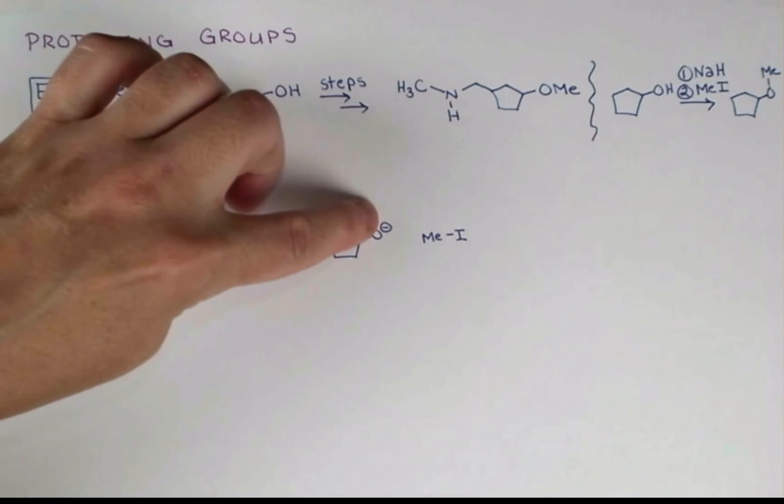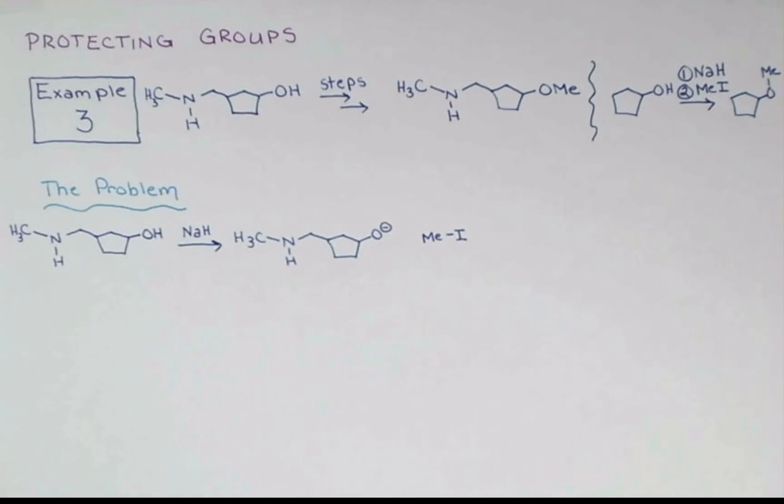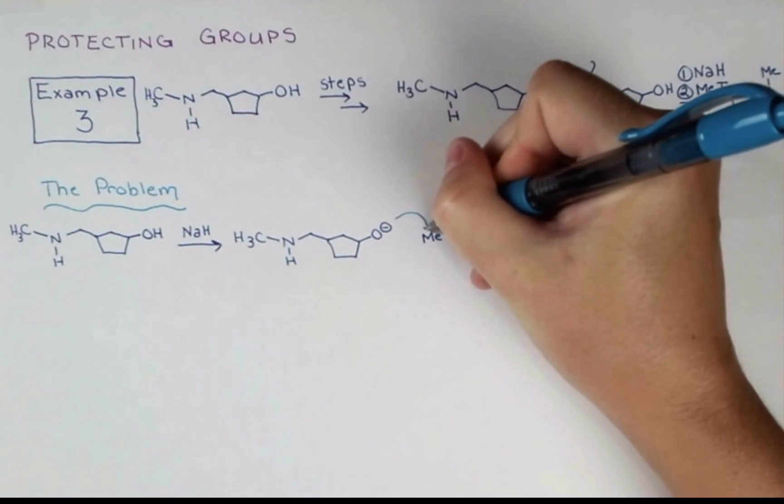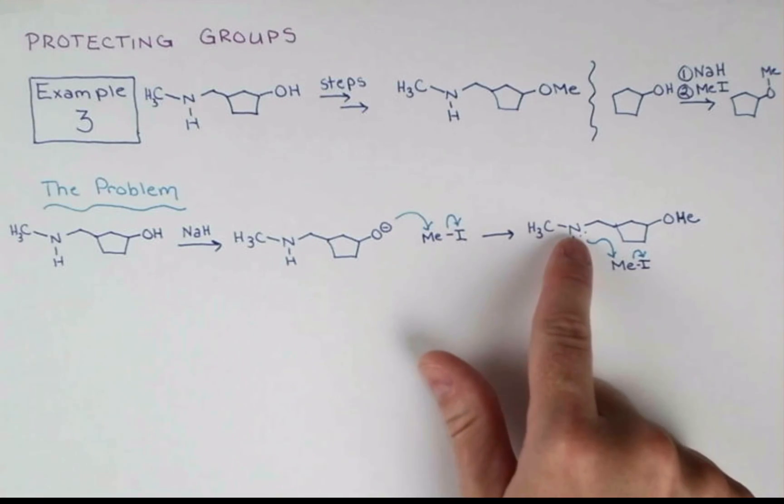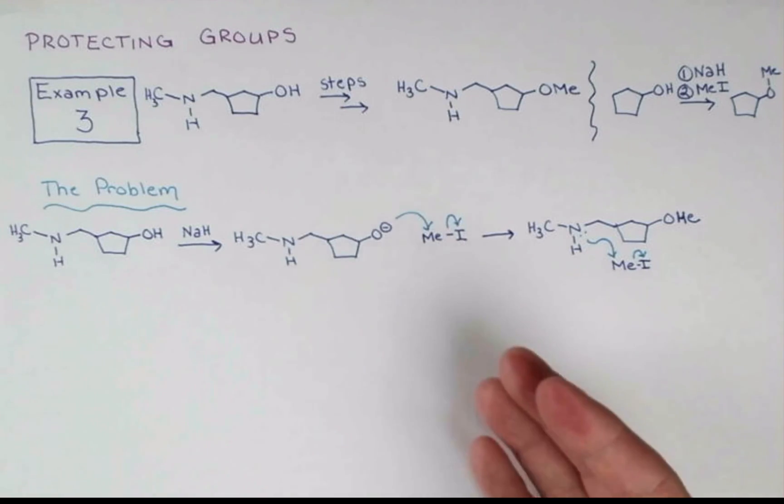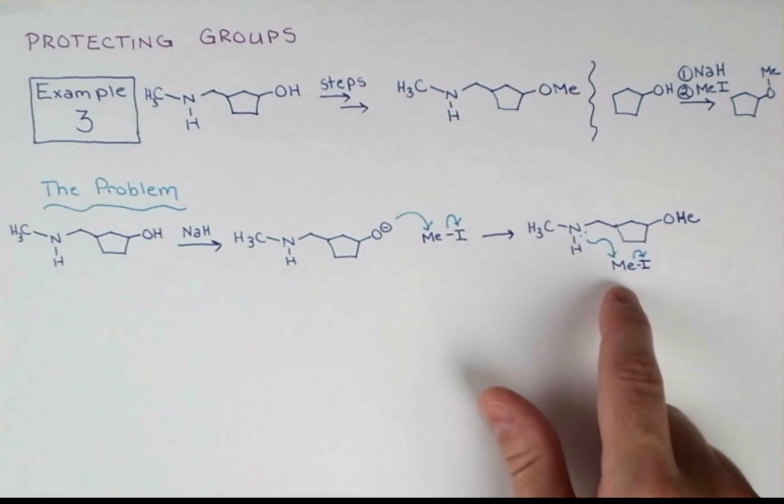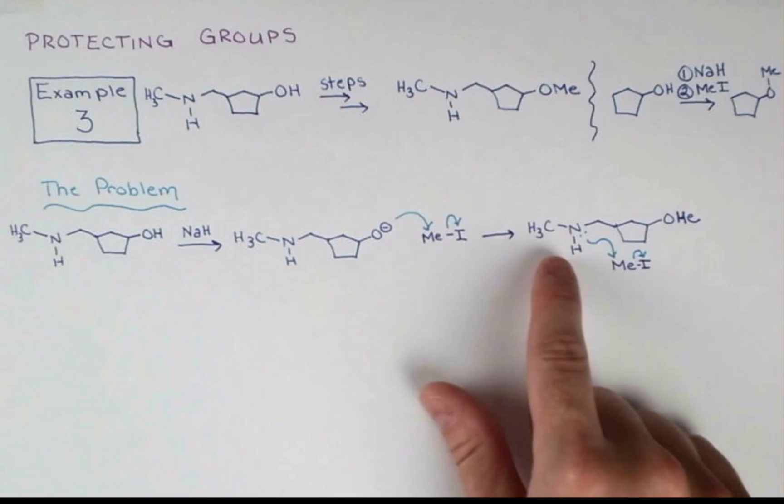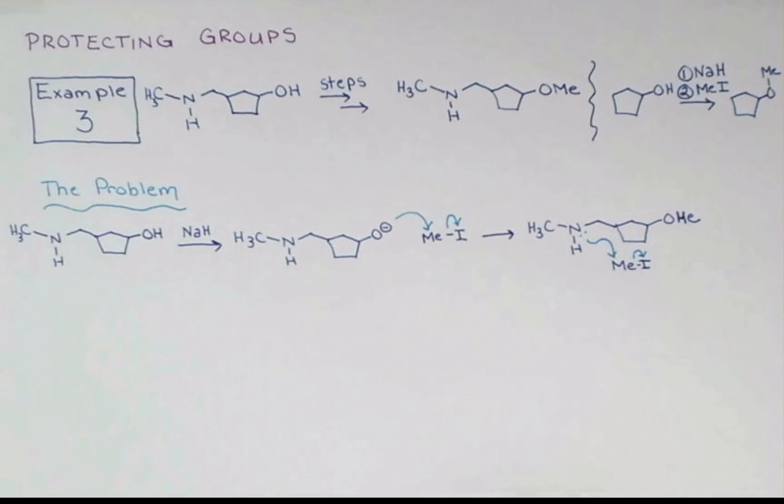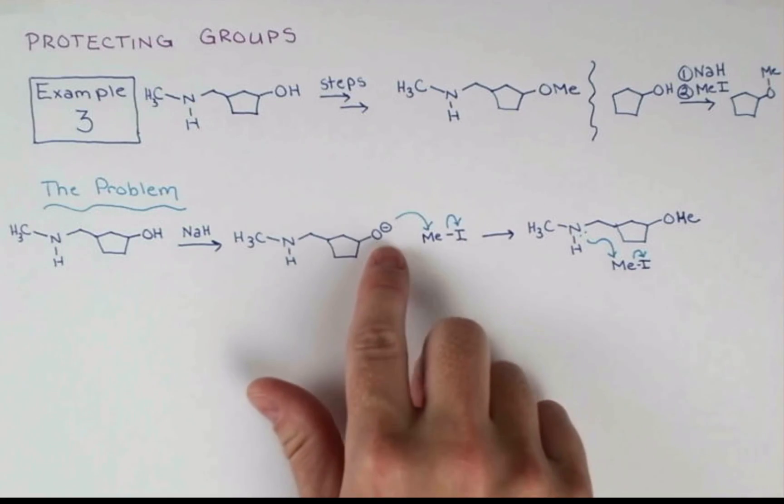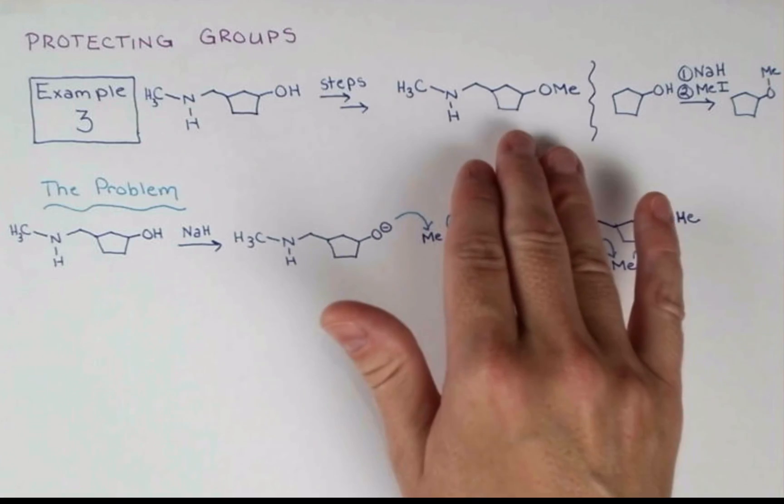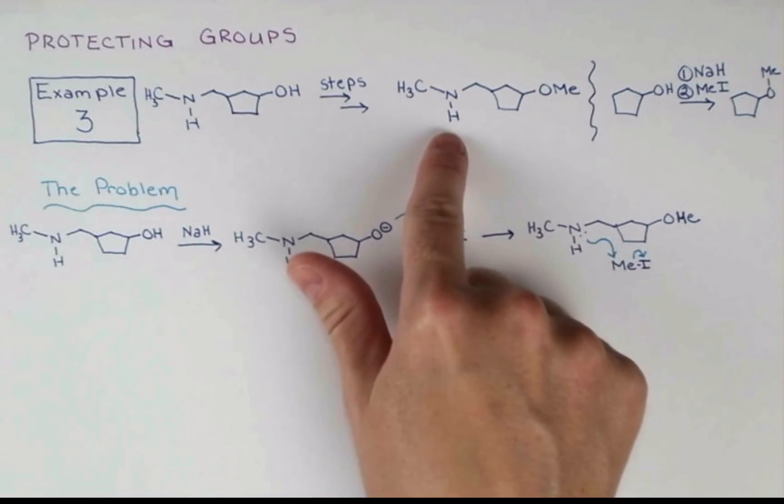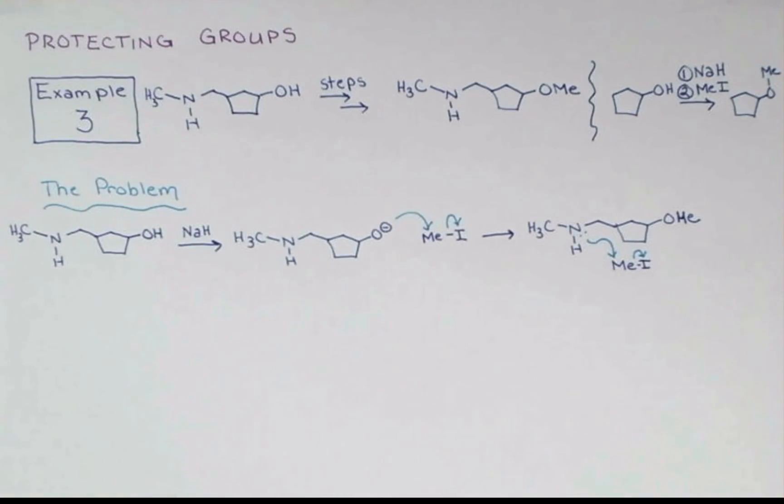Well certainly our alkoxide wants to react with the methyl iodide more, so this would attack displacing iodine. Once we form this, we actually still have a nucleophilic nitrogen in the molecule, and now we don't have our alkoxide to be the better nucleophile. This is going to go ahead and alkylate, kicking off the iodine, and so we're still going to get mixtures of alkylation at the oxygen and at the nitrogen. And so we won't be able to cleanly perform this synthesis where the nitrogen is unreacted. So what should we do?